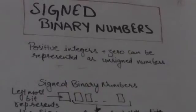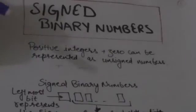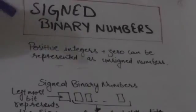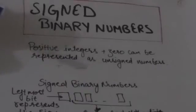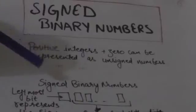Hello friends, welcome back to the tutorials. In this tutorial we will learn about signed binary numbers. Positive numbers including zero can be represented as unsigned numbers, but to represent negative integers we need some notation to represent negative values. In normal arithmetic we use a plus sign to indicate a positive number and a minus sign to indicate negative numbers.